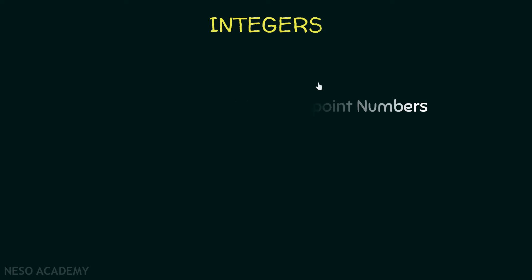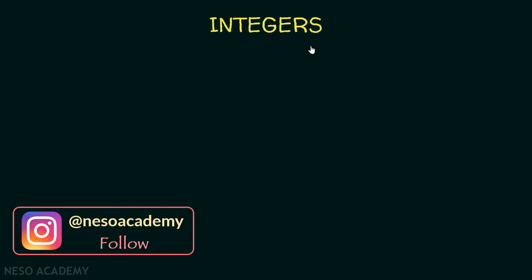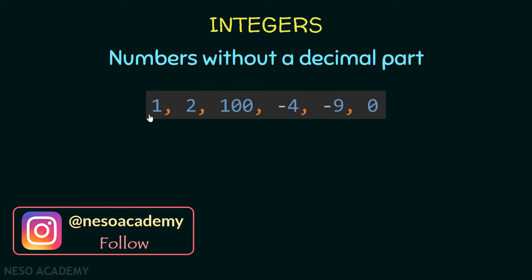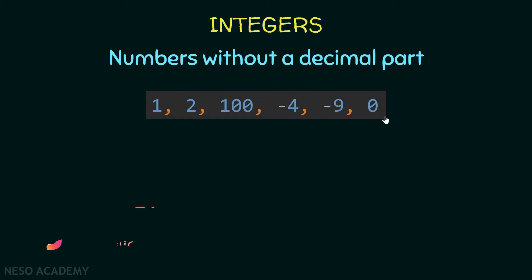What are integers? An integer is a number without a decimal part. Here are some examples: 1, 2, 100, -4, -9, 0. All these are examples of integers—they are numbers without a decimal part.